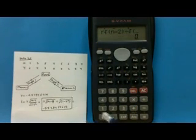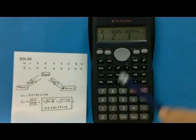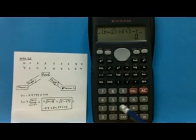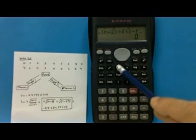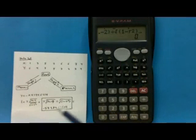1 minus R square. 1 minus. Shift 2. 2. Pick R up. Square here. Close bracket. Finish.